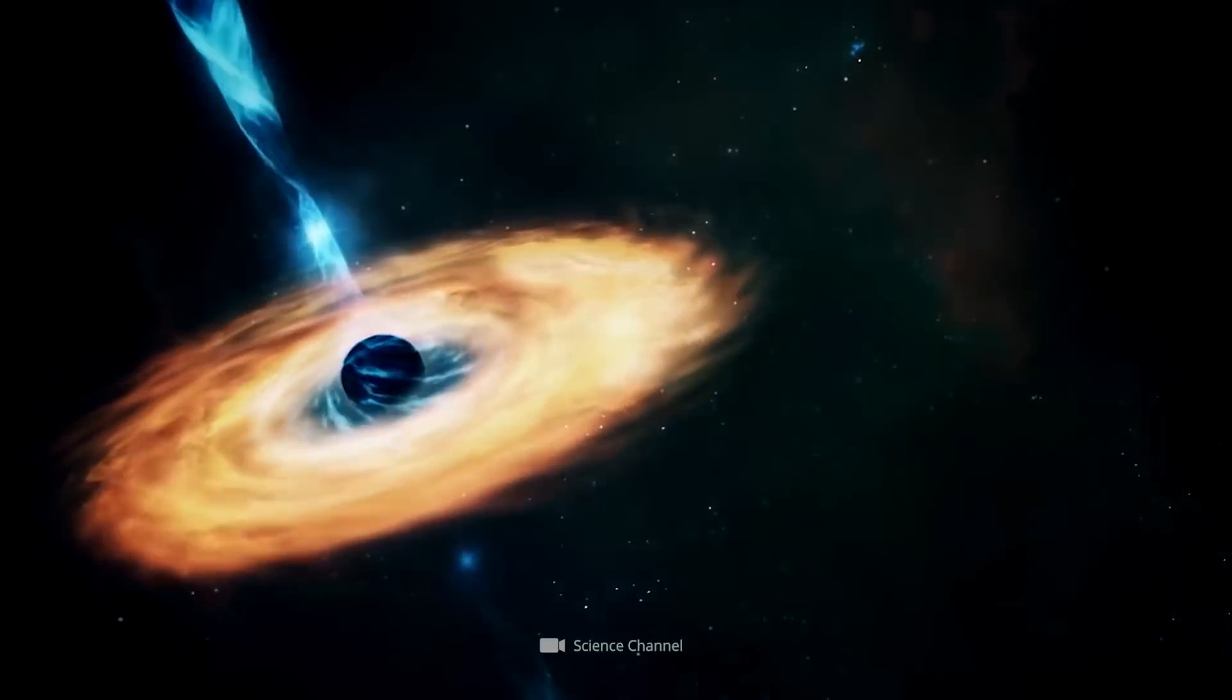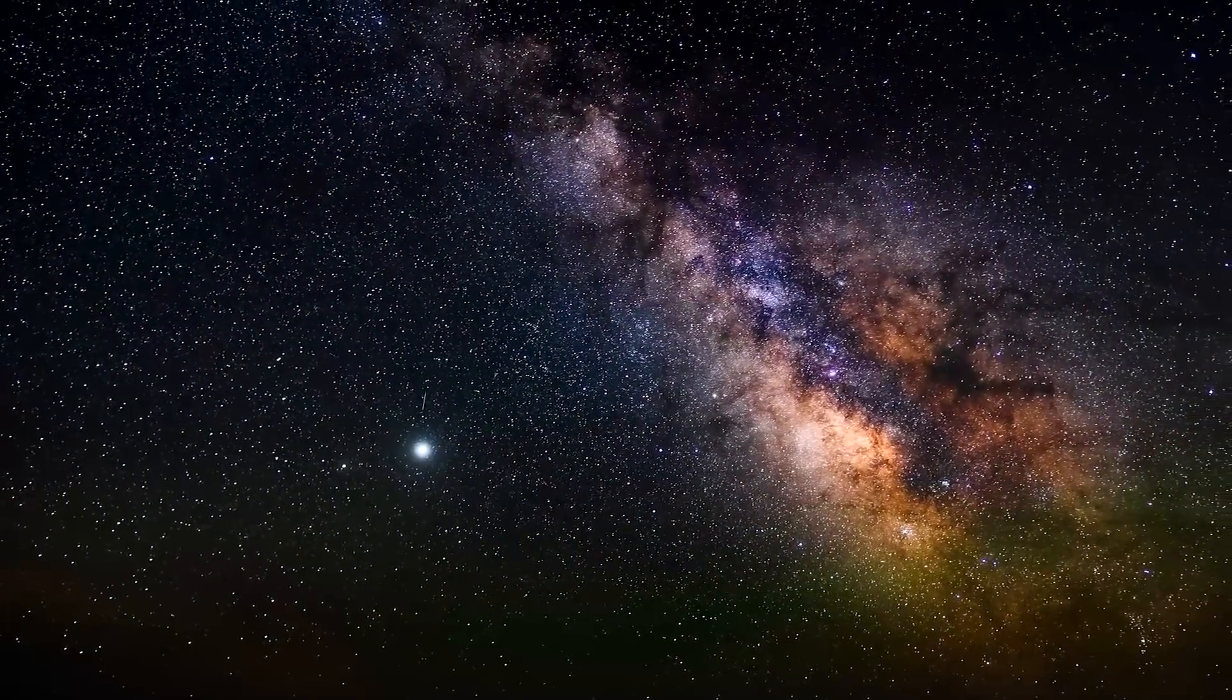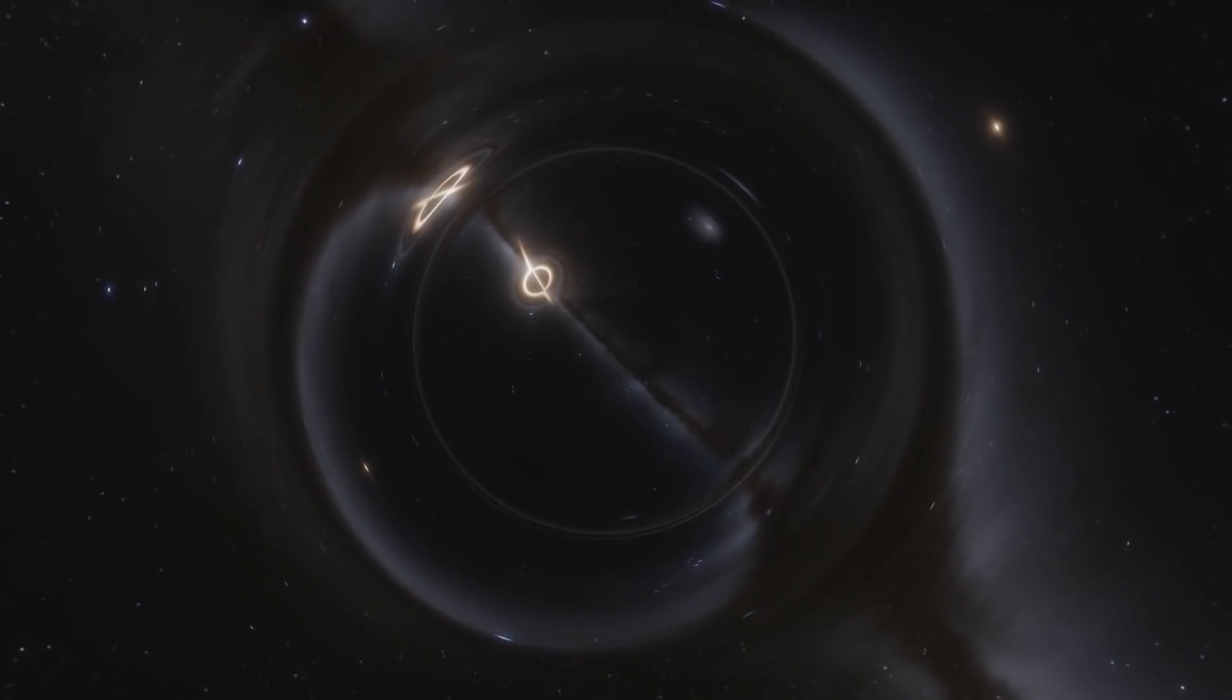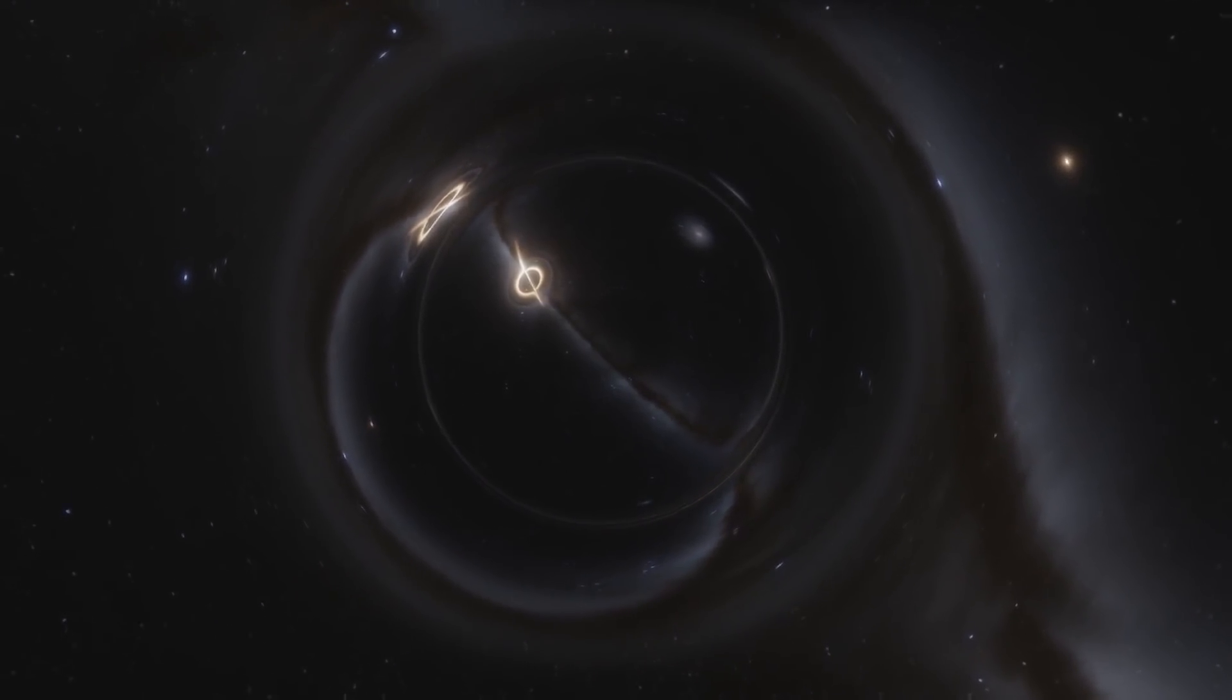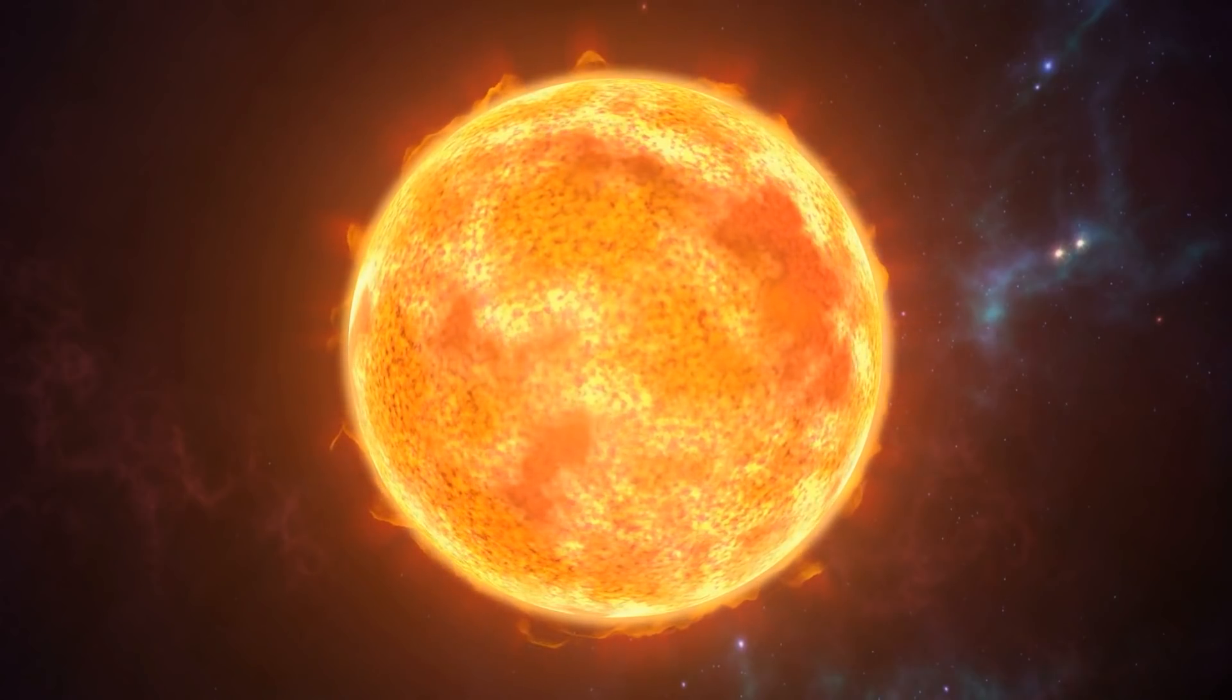How this incomparable compactness appears in reality becomes clear if we consider the following example. A theoretical black hole that would have the mass of our sun would have an event horizon whose diameter is just 4 miles. In comparison, the diameter of our host star is almost 9 million miles.